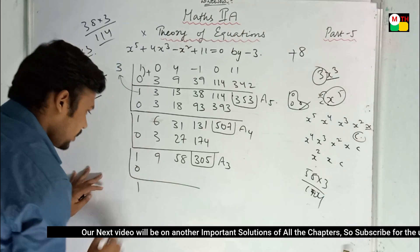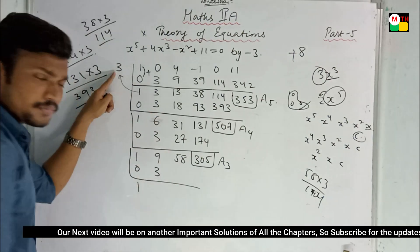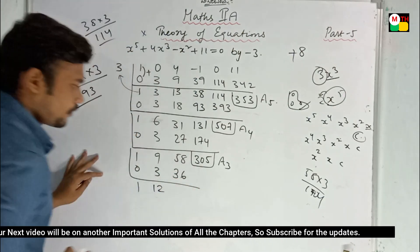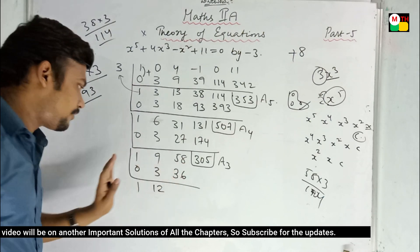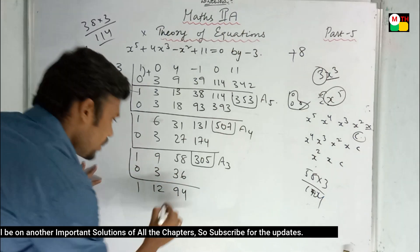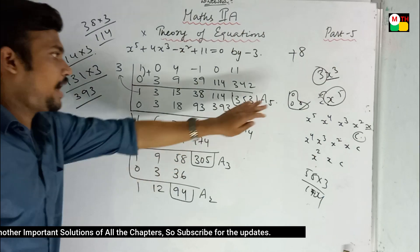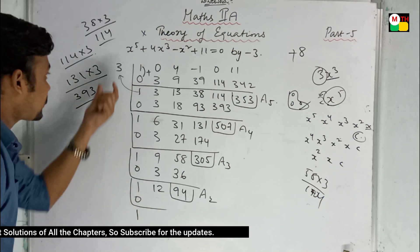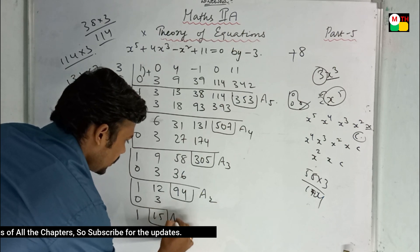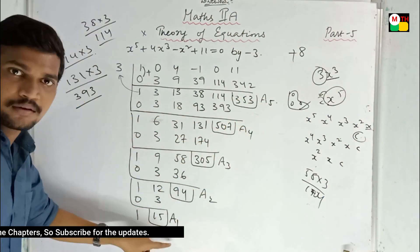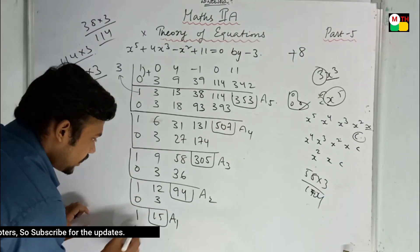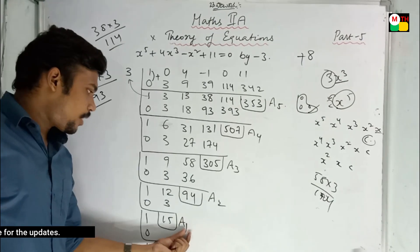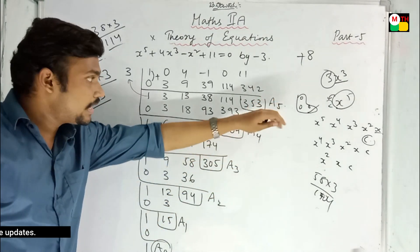Very good. 0. 1 plus 0, again 1. 1 into 3 is 3. Then 12. 12 into 3 is 36. That's the same thing. 88, 94. So 94 — that's A2. A5, A4, A3, A2. 1 plus 0 is 1. 1 into 3 is again 3. Then 15 — that would be A1. 5, 4, 3, 2, 1. Final: A1. 1 plus 0 is 1. This would be A0. So A0, A1, A2, A3, A4, A5 — till A5 we got.